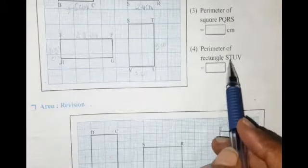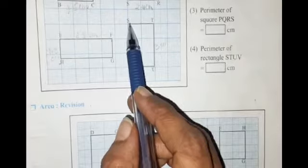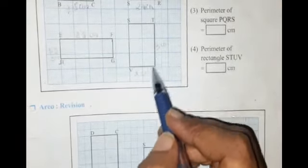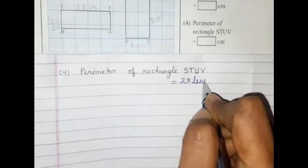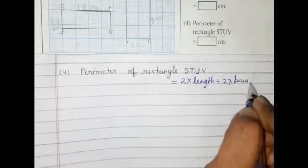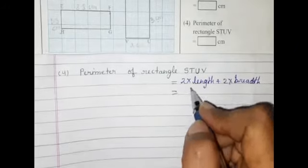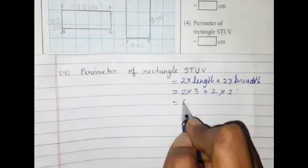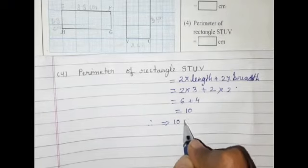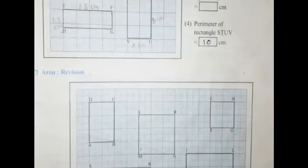Now the fourth one: perimeter of rectangle STUV. Length is 3 centimeters and breadth is 2 centimeters. Formula: perimeter = 2 × length + 2 × breadth = 2 × 3 + 2 × 2 = 6 + 4 = 10. Therefore, perimeter of rectangle STUV is 10 centimeters. Thank you.